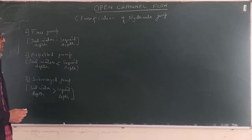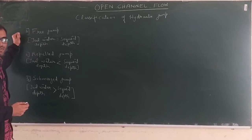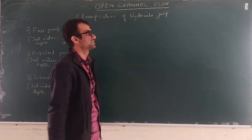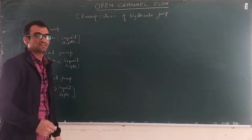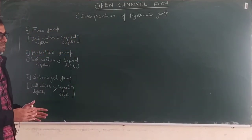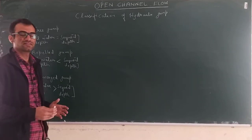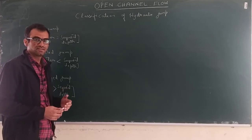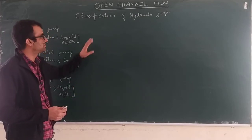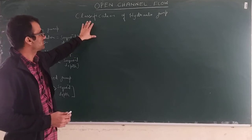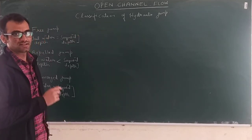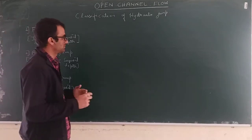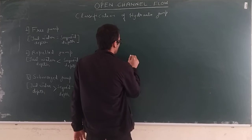Last time we discussed the equation of hydraulic jump, so today we are going to discuss the classification of hydraulic jump. This classification is based on tail water depth. The classification of hydraulic jumps can be done based on two criteria: one is the tail water depth and the second is the initial Froude number. First, in today's class, we are going to discuss classification based on the tail water depth.